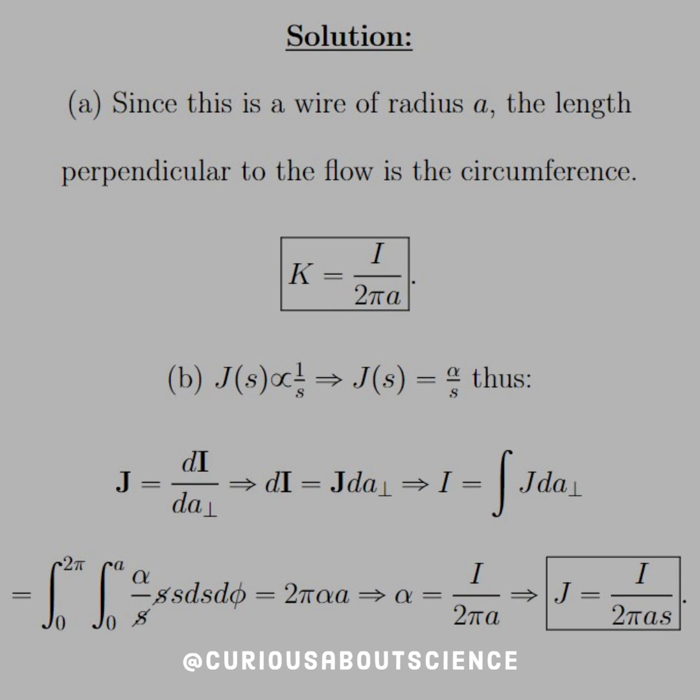Solving this for α, we get I over 2πa, similar to what we found in the surface case. And then we could just substitute that into J equals α over s, and simplify down. So we end up with J equals I over 2πas.